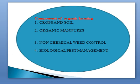The next component is biological pest management, which is one of the challenging management systems in organic farming. It is carried out by adopting different biopesticides and by using botanical pesticides derived from neem, as well as parasitoids like Trichogramma, insect pathogens like Bacillus thuringiensis, and Nuclear Polyhedrosis Virus, which are used to control pest populations in the field.